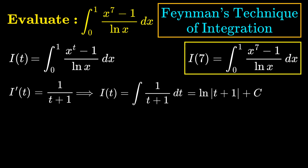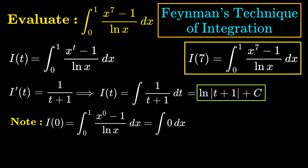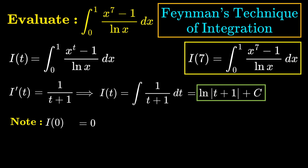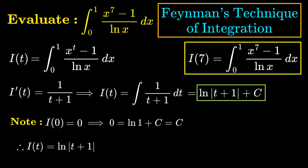This gives us ln|t+1| + c. We now have to determine the constant c, which follows easily by noting that I(0) = 0, since the integrand is just 0 when t = 0. So we see that c is also 0.